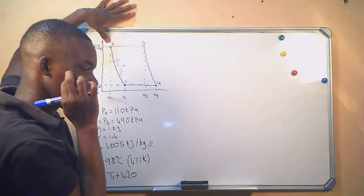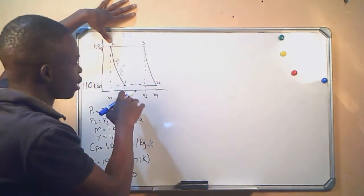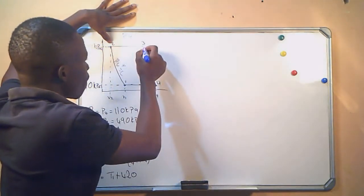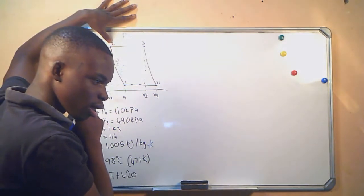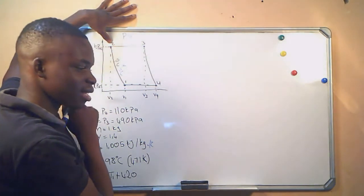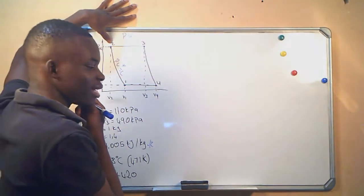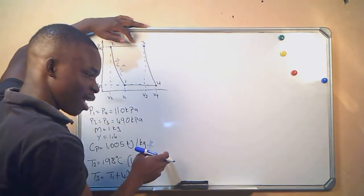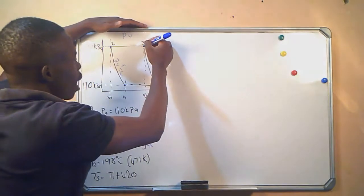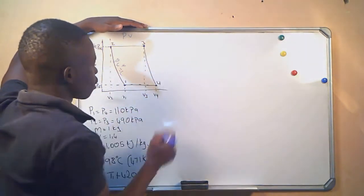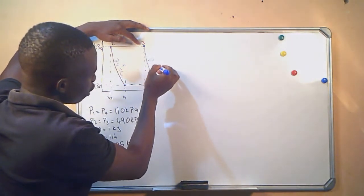Heat is then transferred to the air at constant pressure. At constant pressure, the temperature is increasing and the volume is increasing, but the pressure is not increasing. This continues until the temperature is 420 degrees Celsius greater than the initial cycle temperature. The air is then expanded isentropically from point C back to the initial pressure of 110 kPa — that expansion from point 3 to point 4 follows PV raised to gamma equals a constant.